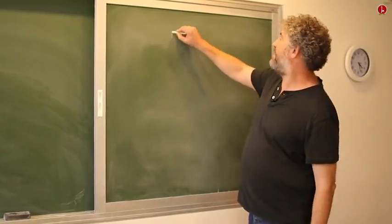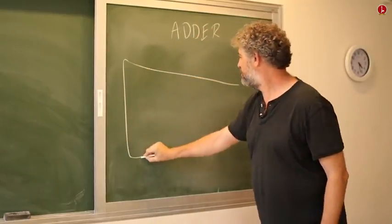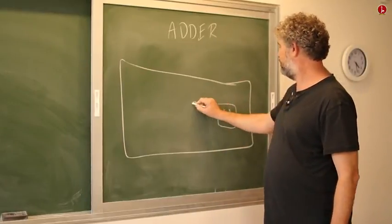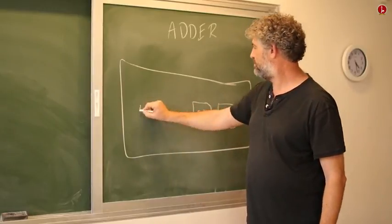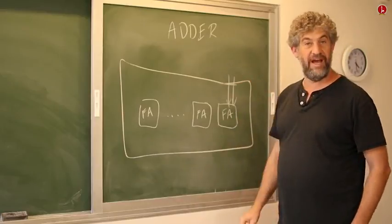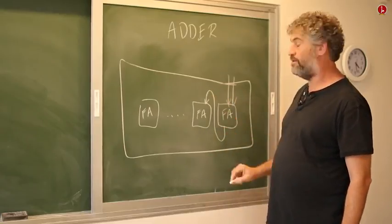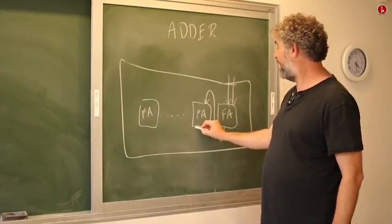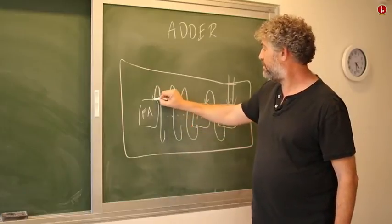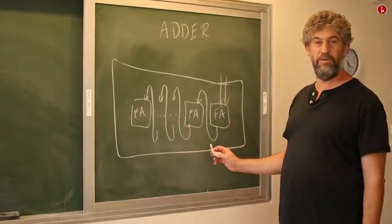Let us recall the implementation of the adder. The adder was constructed with a sequence of full adders inside it. Each full adder got some inputs from the input of the adder gate, and then importantly, one of its outputs — the carry — went on to the next full adder. Similarly, the carry from that full adder went down to the next, and so on. This chain of connections is really the problematic one that we wish to optimize.